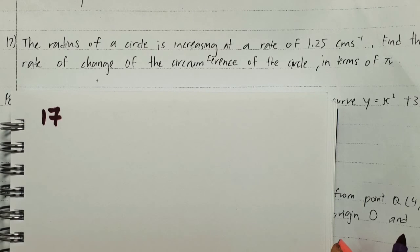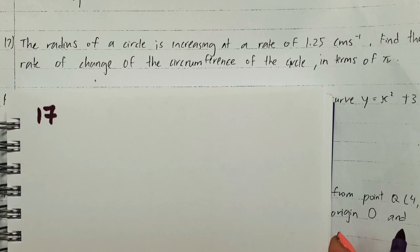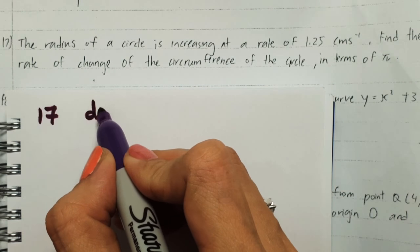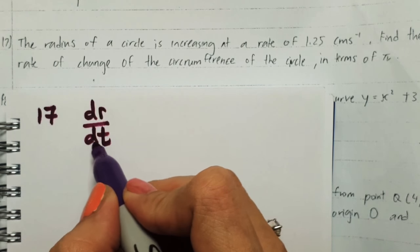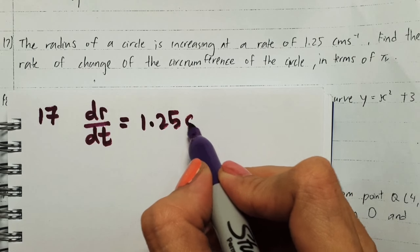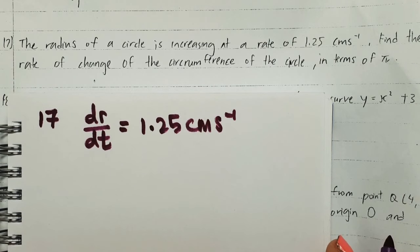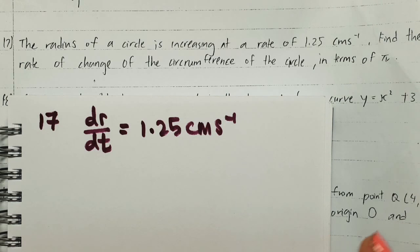At the rate, so this is the application, the third application, the rate of change. The radius, so that means let's write it in terms of symbol dr/dt. The changes over time, it's given 1.25 cm per second. Find the rate of change of the circumference of the circle, so we need to find...